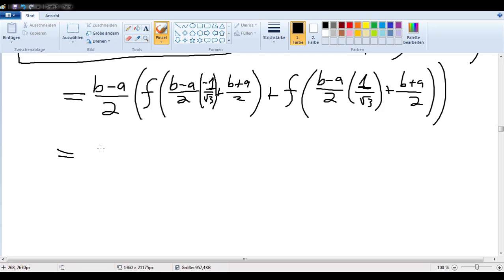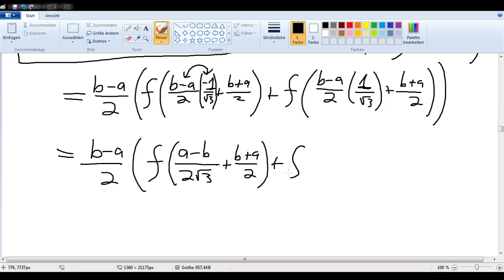Now we can just simplify that a little bit. (b minus a) over 2 times f of... now these two minus signs just swap the direction of a and b. So I have (a minus b) over 2 times the square root of 3 plus (b plus a) over 2, plus f of (b minus a) over 2 times the square root of 3. Because this 1 did not change anything, right? Plus, and then if this stays the same, of course (b plus a) divided by 2.